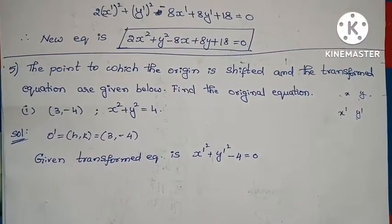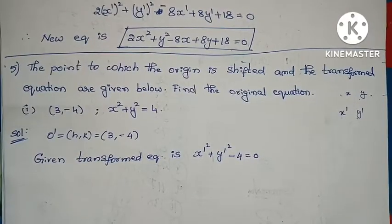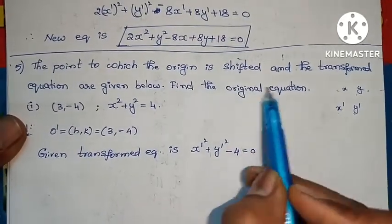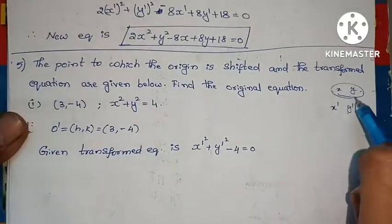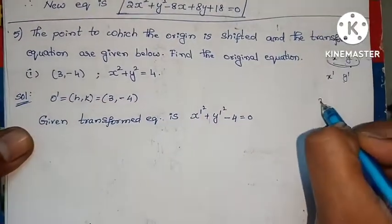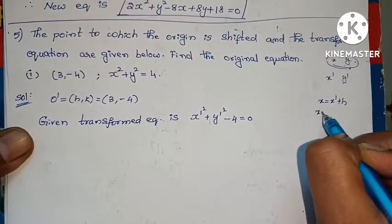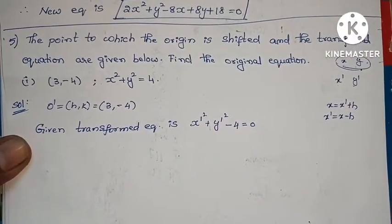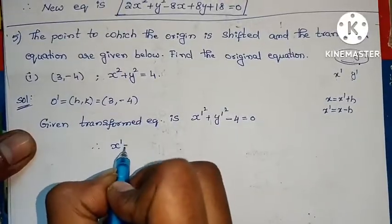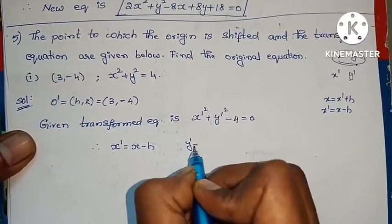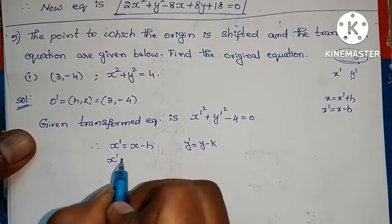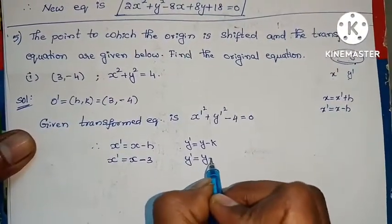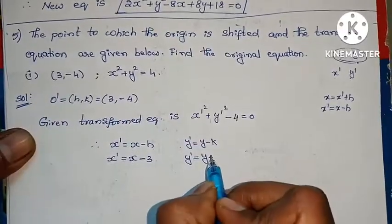To find the original equation from the transformed equation with x dash and y dash: x equals x dash plus h, so x dash equals x minus h. Similarly y dash equals y minus k. Therefore x dash equals x minus 3, and y dash equals y minus k; since k is minus 4, minus into minus gives plus 4, so y dash equals y plus 4.